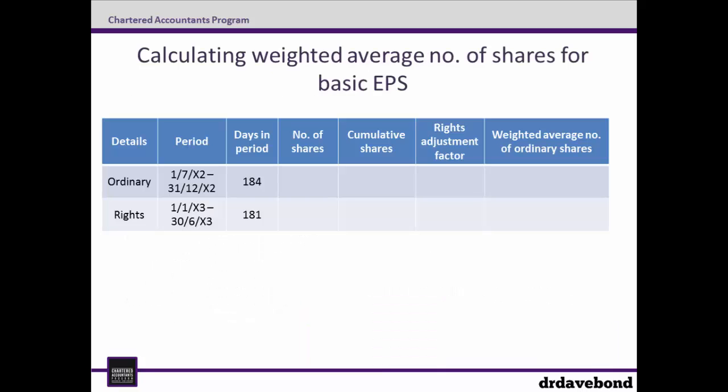The easiest way to work this out is with the following table. For each set of shares, add in the periods of time that they were on issue until the next set of shares was issued, then work out the days for that line. For example, the period for the first line begins at 1 July 20X2 and goes up until 31 December 20X2 — the day before the rights issue occurred — a period of 184 days. We then add in the number of shares for that set: 3,225,000, and add this to the cumulative column amount, also 3,225,000.